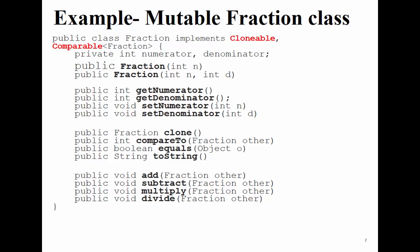Now, here is a class called Fraction. This class implements the Cloneable interface and Comparable interface — we'll cover those in the next slides. This class is actually not immutable as written. Why? Can anyone say why this class is not immutable by looking at it? Any suggestions?